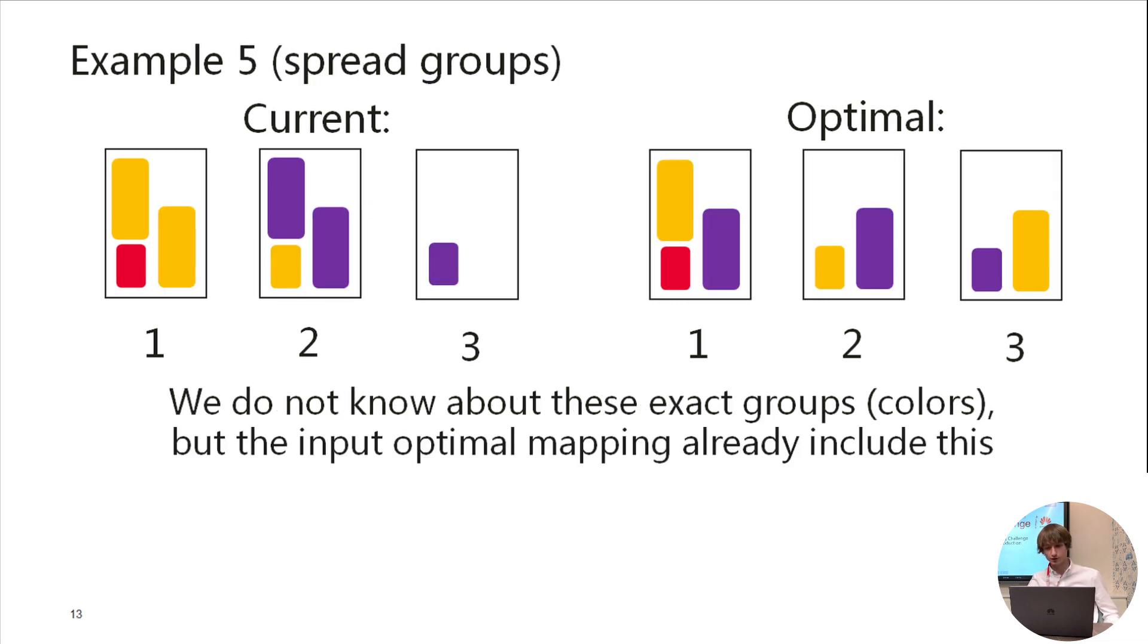Example 5 is a more interesting situation. You can see that there are multiple virtual machines of the same color here, like orange and purple. And in the optimal state, each color will be used only once for each server. So, this represents some kind of groups that must be scattered across the cluster. We do not know about these exact groups, the colors, in our input. But the optimal placement already satisfies this constraint.